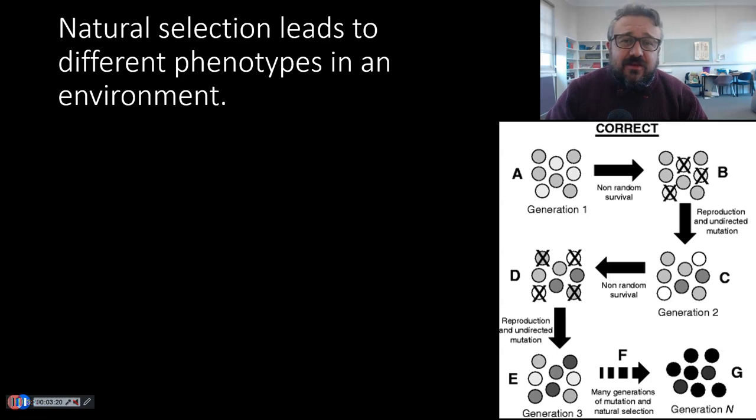Whereas, with an explanation, we're using something which is not in doubt, which is why we've chosen natural selection and evolution, the most not in doubt topic in all of biology. So, natural selection leads to different phenotypes in an environment. Different physical characteristics within a species in an environment.